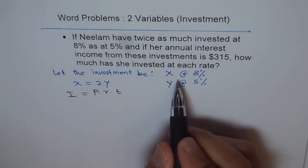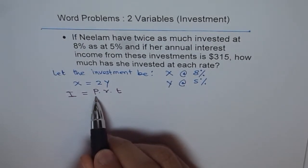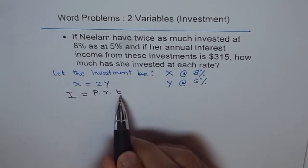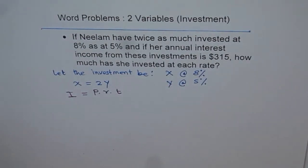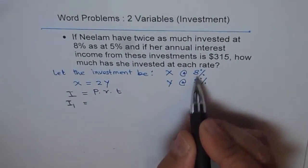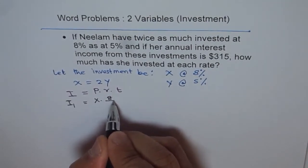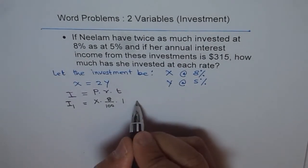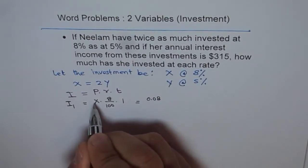What is the income from X amount at 8%? You will write X for P. For R, you will write 8%. That means 8 over 100. And time is 1 year. Let's write down both the incomes. Income 1, this income 1 is from 8% and the amount is X. X times rate of interest is 8%, 8 over 100, and time duration is 1 year, annual. This is equal to 8 over 100 is 0.08X.